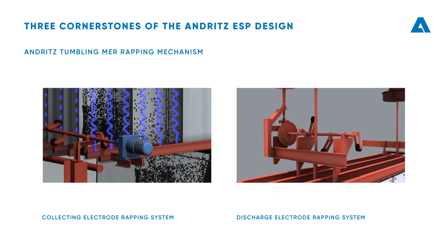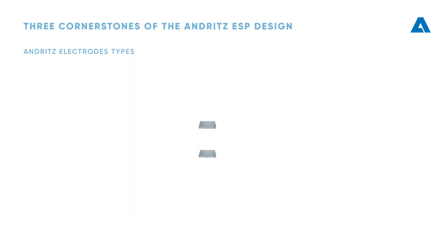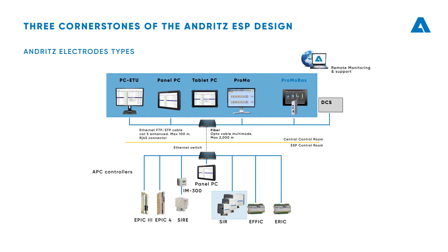Anrits' tumbling hammer type rapping arrangement is a simple yet robust design and achieves effective cleaning with reliable operation. The heart of the ESP is the Anritser — the integrated control and ESP power supply system — which includes the self-optimization software EPIC, with up to 97% energy efficiency. For existing ESPs using conventional TR sets, Anrits offers a controls upgrade to the Electrostatic Precipitator Integrated Controller Generation 4, commonly known as EPIC 4.